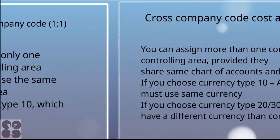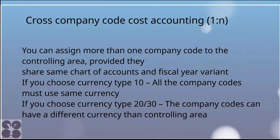The company code must use the same currency as the controlling area; the system defaults currency type 10, which cannot be changed later. For cross company code controlling, there can be multiple company codes in one controlling area — a one-to-many relationship. You can assign more than one company code to the controlling area provided they share the same chart of accounts and fiscal year variant. If you choose currency type 10, all company codes must use the same currency. If you choose currency type 20 or 30, the company codes can have a different currency than the controlling area.